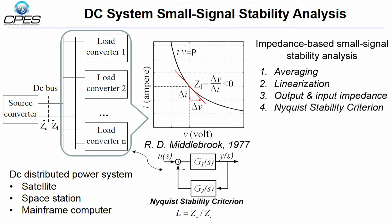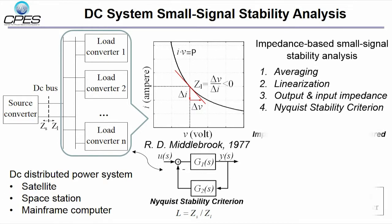First, averaging. Second, linearization around the equilibrium points. Third, find out output and input impedance of the system. Fourth, apply Nyquist criteria. Impedance of power converters can be directly measured, so the impedance-based stability analysis is preferred by power converter engineers.